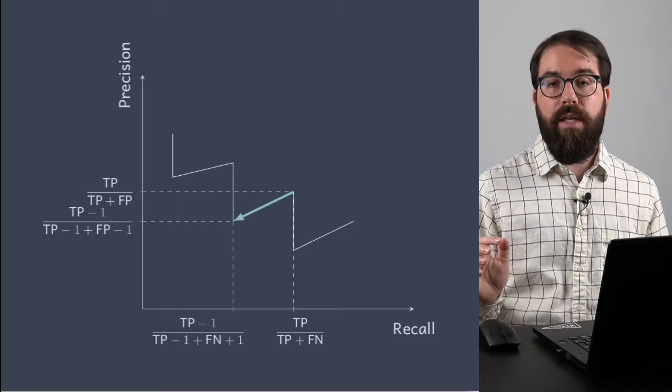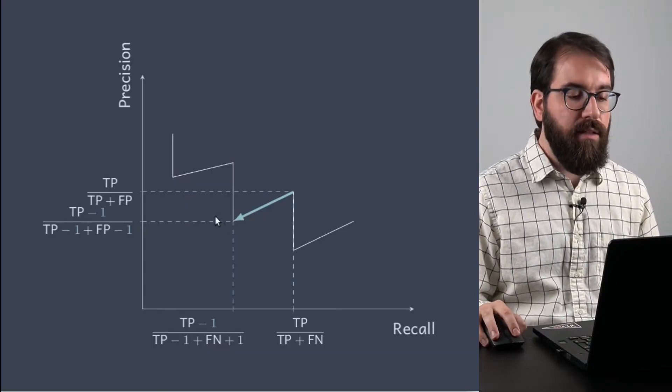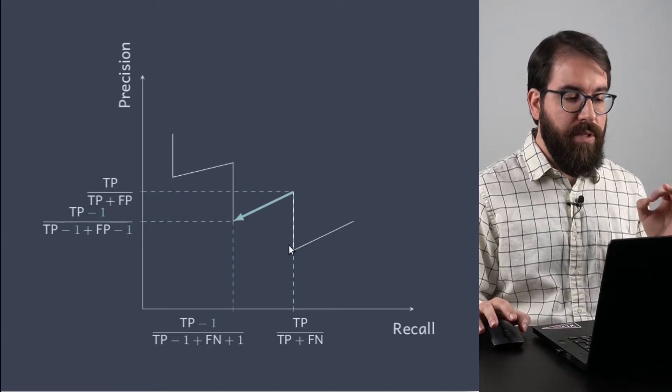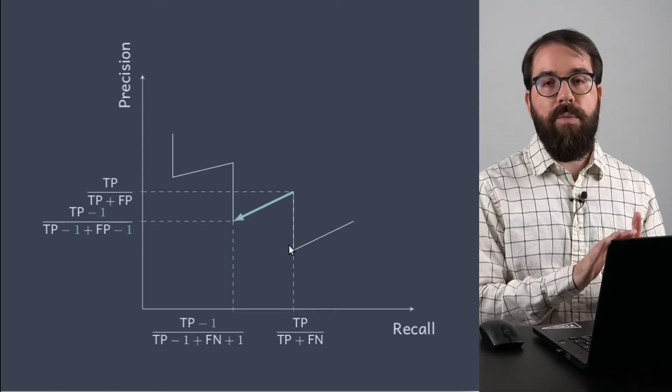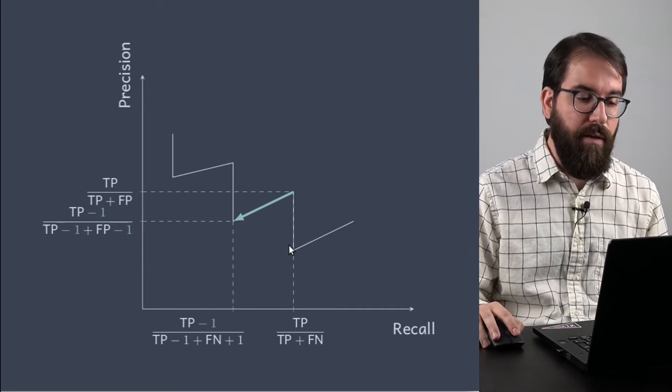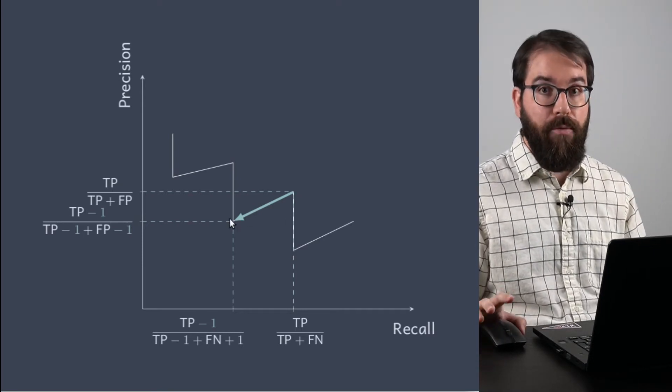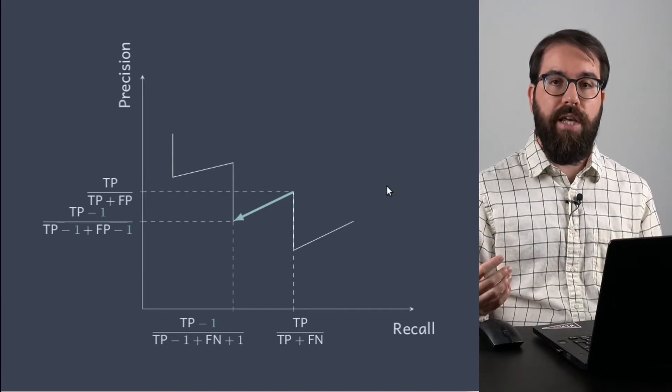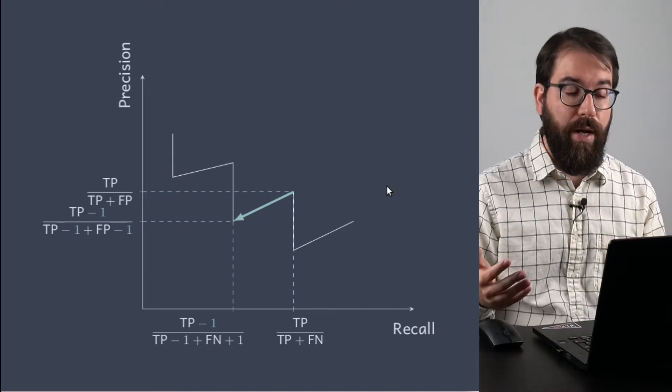Now let's look into the precision versus recall curve. As I already said, it has a sawtooth shape. As we move the threshold from left to right, the curve goes from right to left. Let's see how recall and precision change from one point to the other as we change the threshold position.